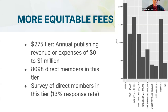We sent a survey to over 8,000 organizations who are direct members of Crossref. Currently Crossref has just over 21,000 organizations as members, and close to 20,000 of those qualify within the $275 per year tier. However, just over 8,000 of those are direct members — others joined through sponsor organizations acting as umbrella organizations who pay a joint fee. We've been very lucky with a relatively high 13% response rate in this survey, and thank you very much to those who responded.